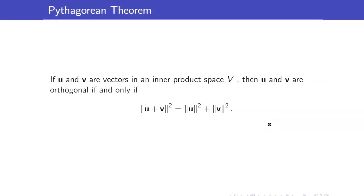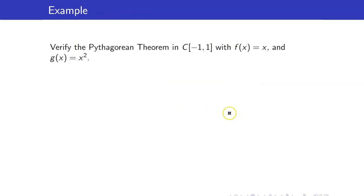We can also generalize the Pythagorean theorem in an inner product space V. Take note that this is only true for orthogonal vectors: the square of the length of u plus v is equal to the sum of the square of the length of u and the square of the length of v. Let us verify the Pythagorean theorem with our functions f(x) and g(x), because we have just shown that these two functions are orthogonal, and thus they must satisfy the Pythagorean theorem.